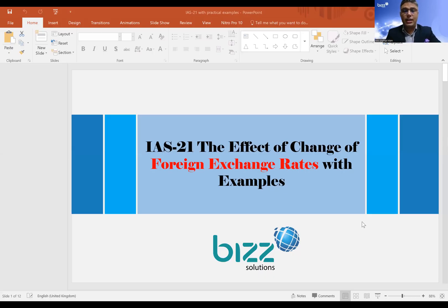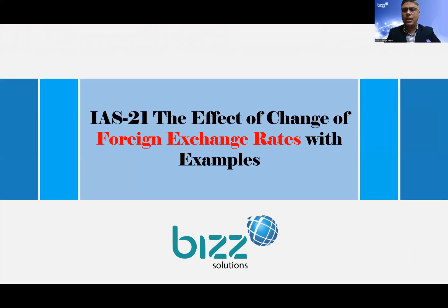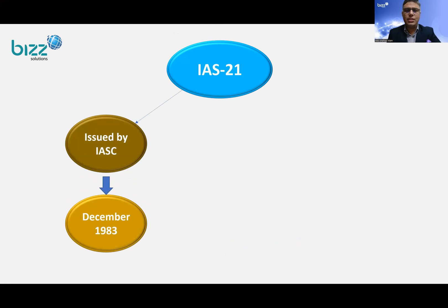Foreign currency transaction and translation related to fluctuation loss and gain — this is very important, especially in Bangladesh, where the dollar against BDT has changed. One year ago it was $85 BDT. I hope this is important for accountants and business professionals. So the topic is the effect of changes in foreign exchange rates. With an example, I hope you will have an interesting discussion. First of all, IAS 21 was issued in 1936.